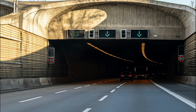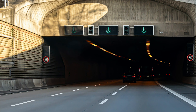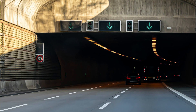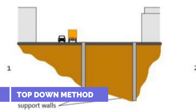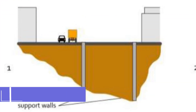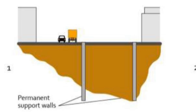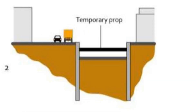There are two methods in the construction of cut and cover tunnels. In the top-down method, from the ground surface level, the support walls and capping beams are constructed first. The walls of the tunnel can be constructed using diaphragm walls, contiguous or secant piled walls, or another method.